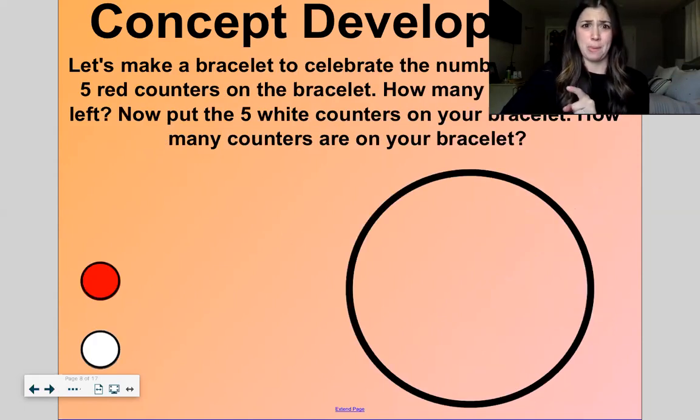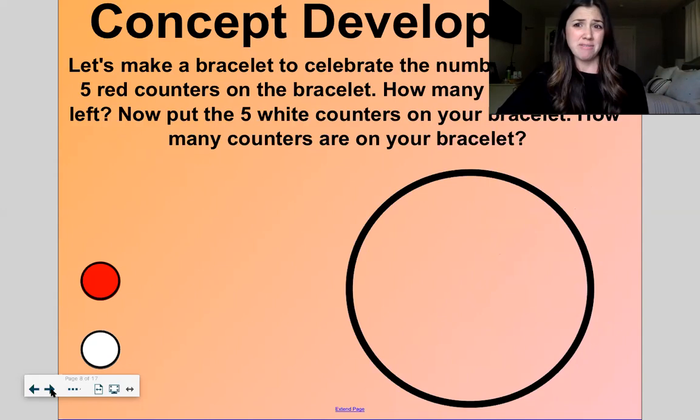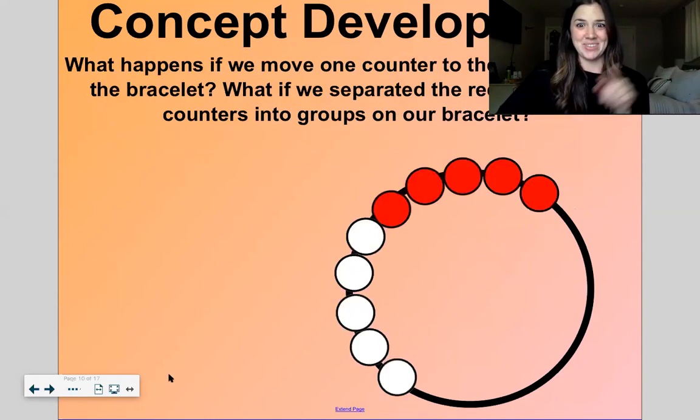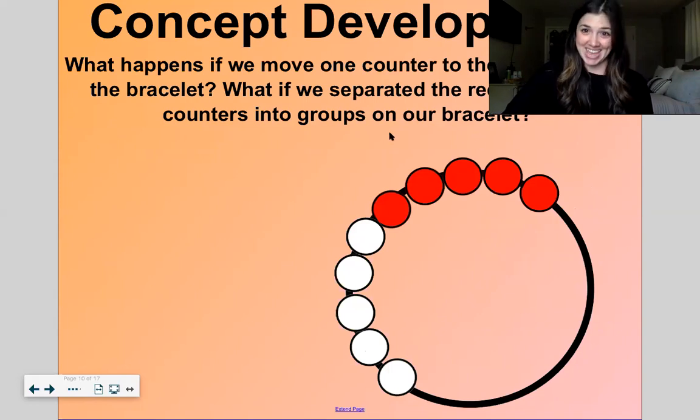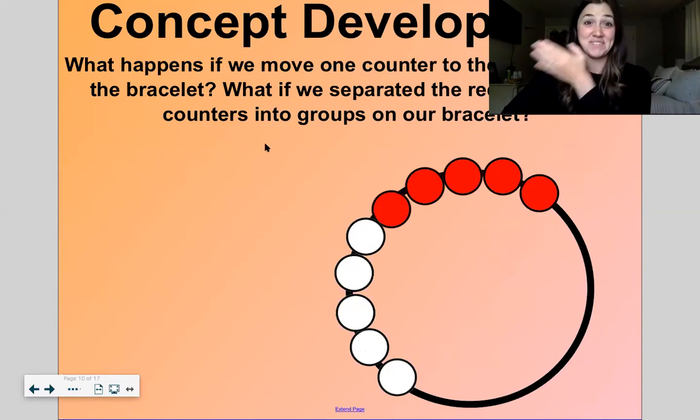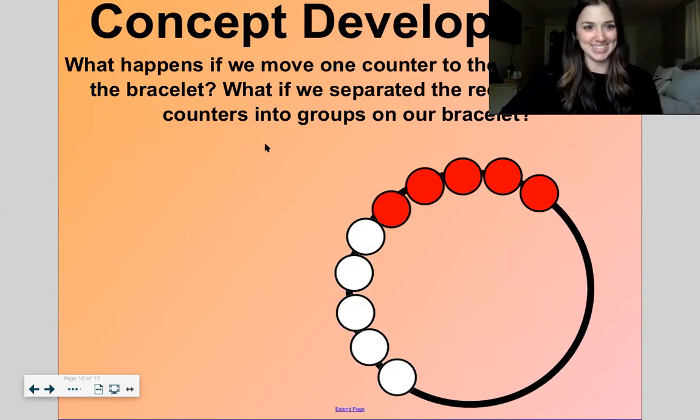Now what if I put five red counters and five white counters around this bracelet? How many would I have then? Let's see. One, two, three, four, five, six, seven, eight, nine, ten. I still have ten. Five and five makes ten.